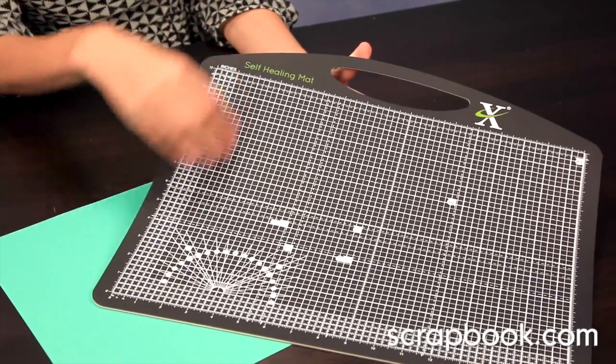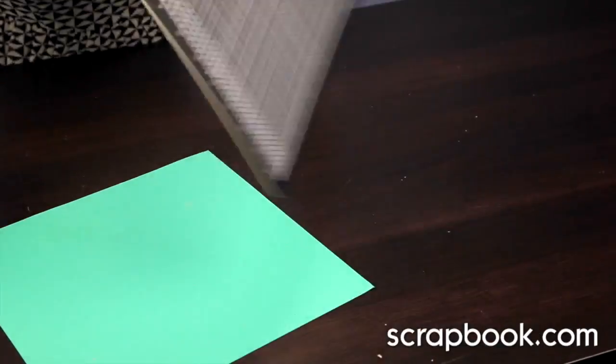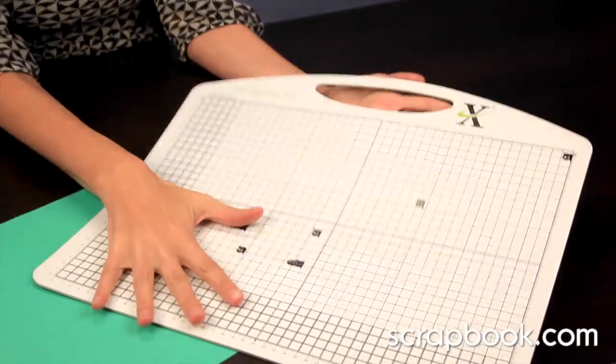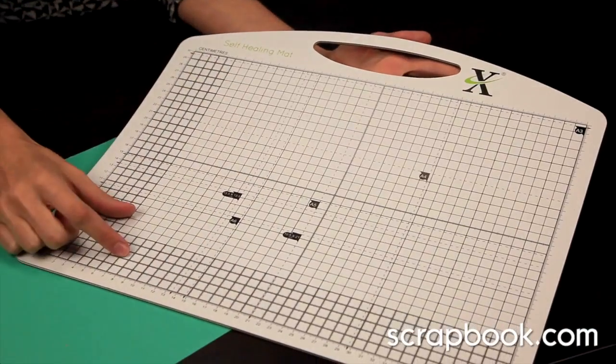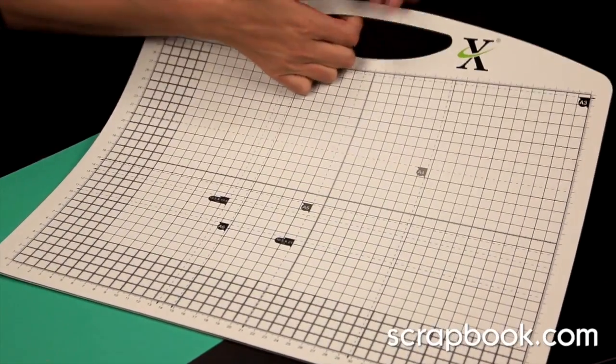It has the black side which features inches, and if you turn it over, the white side has the centimeters, and it does feature a useful handle up at the top.